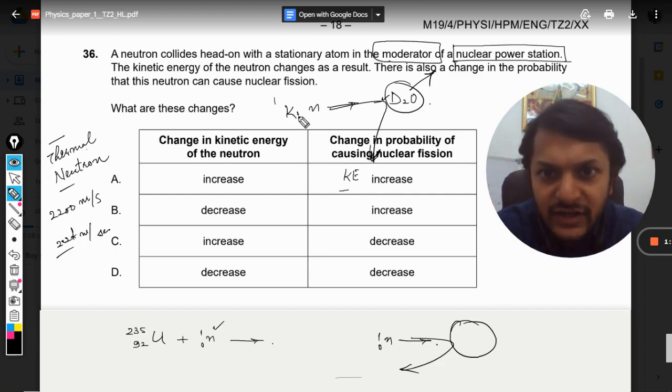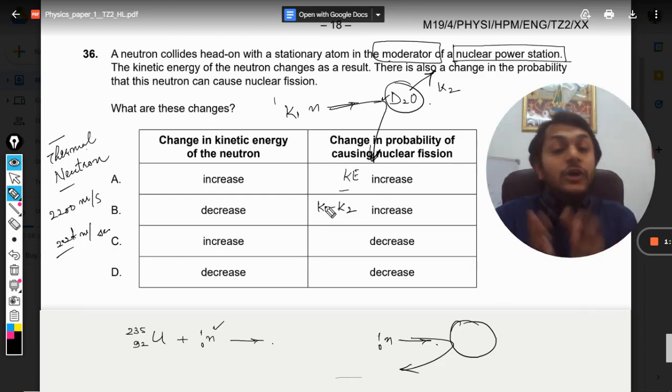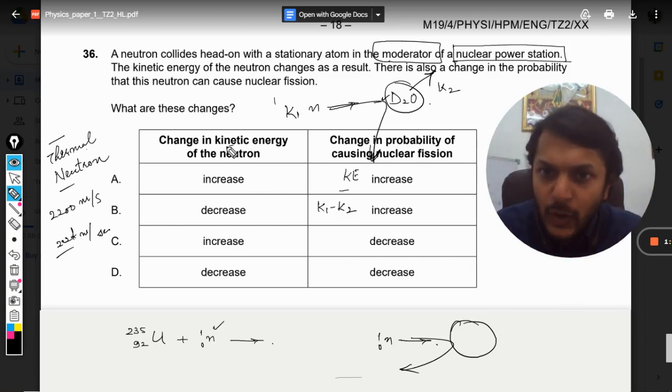So earlier it is having let us say K1. Some energy is given to K2. So what is the kinetic energy left? It is K1 minus K2. So now your neutron is having lesser kinetic energy. So first of all what is the change in the kinetic energy of neutron? It decreases.